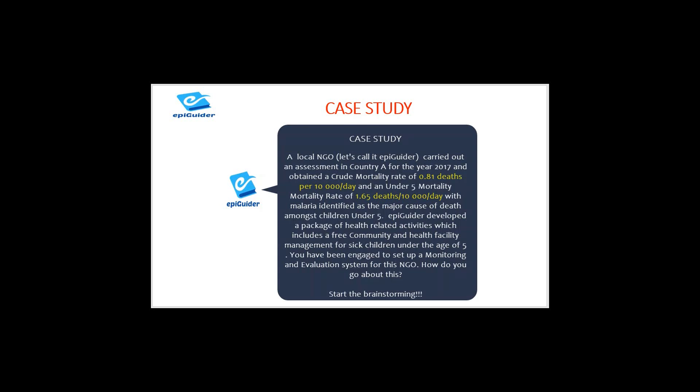Just so you know, the threshold for crude mortality rate is 0.5, and that for under-5 mortality rate is 1.0. So these values are above the threshold and thus considerably high. Having this in mind, Epiguider developed a package of health-related activities, which includes free community and health facility management for sick children under the age of five.